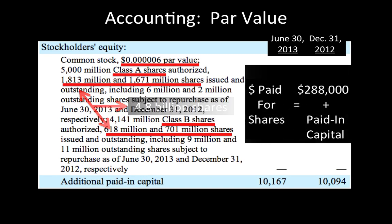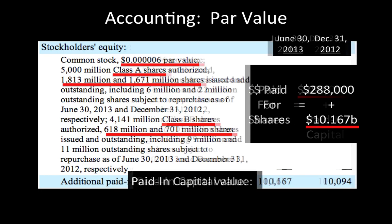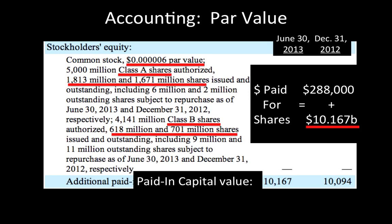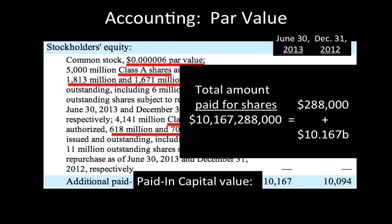Let's insert the par value of $288,000 into our equation. The value of paid-in capital as of June 30, 2013 rounds out to $10.167 billion. We insert that amount in our equation, which gives us the total amount that shareholders paid for their shares: $10,167,288,000.